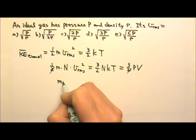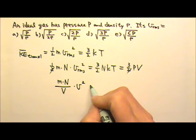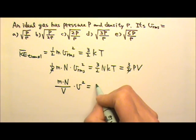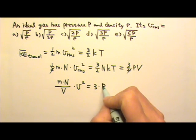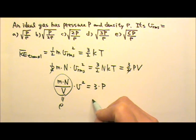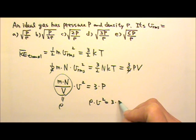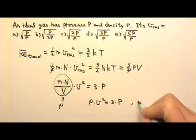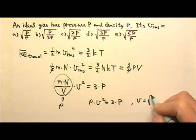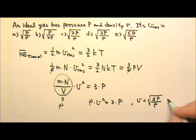So I get m times n divided by volume times v squared equals three times the pressure. This is the density, so density times v squared equals three times the pressure. That means v equals the square root of three times the pressure divided by the density. The answer is d.